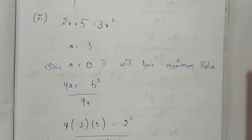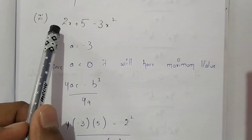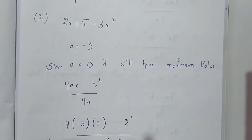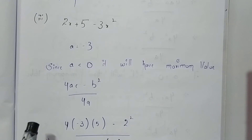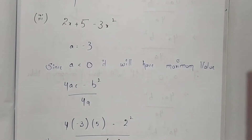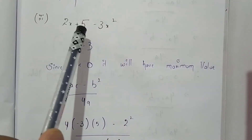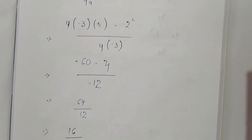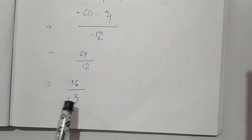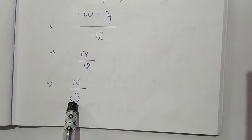Now the third expression is 2x + 5 - 3x². The value of a is -3, that is the coefficient of x². Since a is negative, this expression will have a maximum value. The formula is the same: (4ac - b²) / 4a. Here a is -3, b is 2, and c is 5. Substituting these values we get 16/3 as the maximum value of this expression.